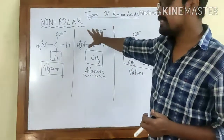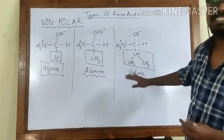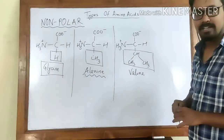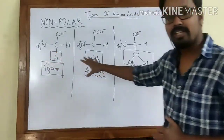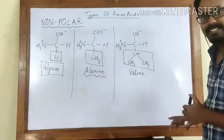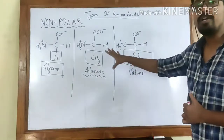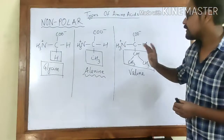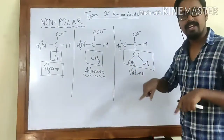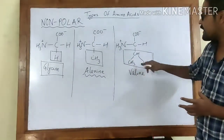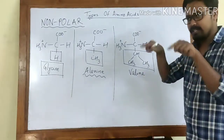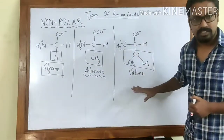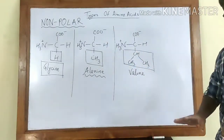Since these are non-polar, they will not react with water — they are hydrophobic. At physiological pH, these side chains are not going to react with water. They only contain carbon and hydrogen with no charge and no polarity. These are all aliphatic side chains, not aromatic — they don't have ring structures. They are straight or branched chains. These first three — glycine, alanine, and valine — are the non-polar aliphatic amino acids.